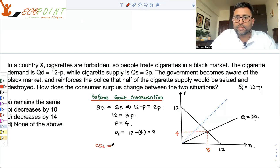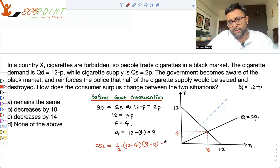I'm writing it consumer surplus 1 because this is before the intervention case, case 1 you can say. So consumer surplus is this area, the area of this triangle. So what is that? 1 by 2, 12 minus 4, into 8 minus 0. That comes out to be 32.